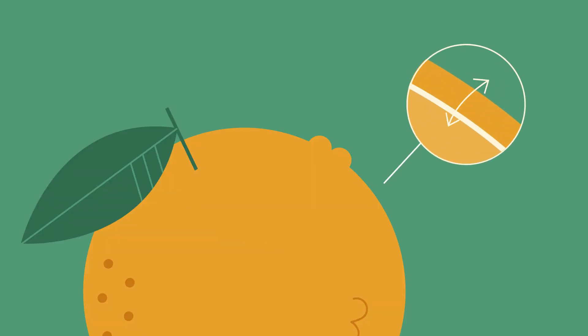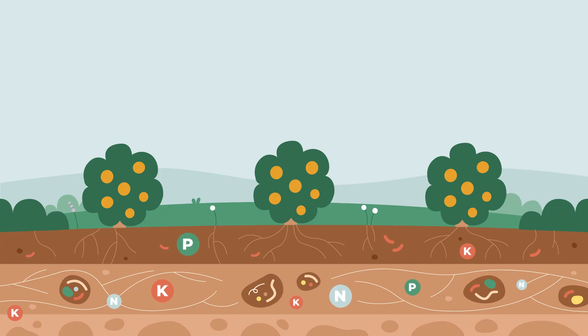They help form a thick skin that protects the fruit. And after harvest, the soil remains alive, ready for the next cycle.